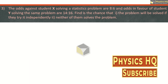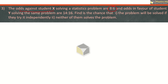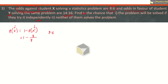The odds against student x solving a problem are 8 is to 6, and odds in favor of student y solving the same problem are 14 is to 16. Find the chance that the problem will be solved if they try it independently, and also find the probability that neither of them solves the problem. The probability of x solving: odds against x are 8 is to 6, so probability of x dash is 8 upon 8 plus 6, which is 8 by 14. Therefore probability of x is 1 minus 8 by 14, which is 6 by 14.